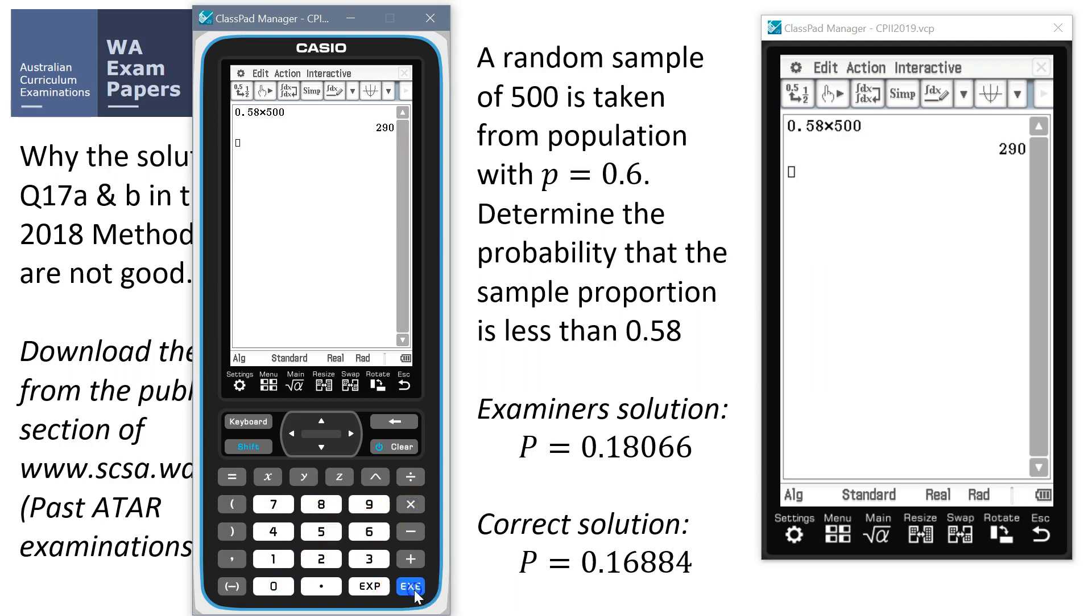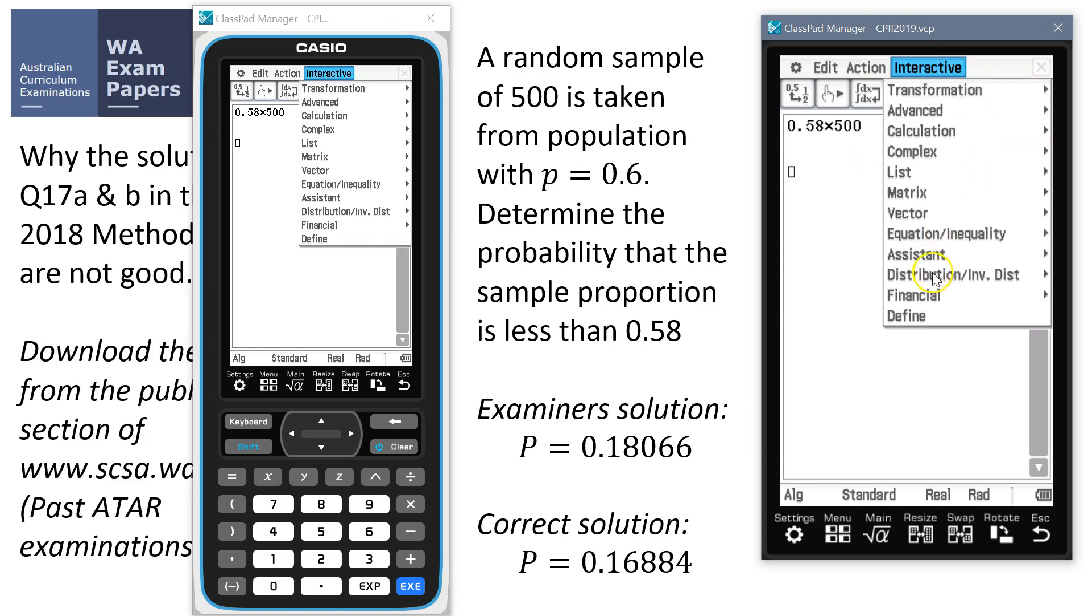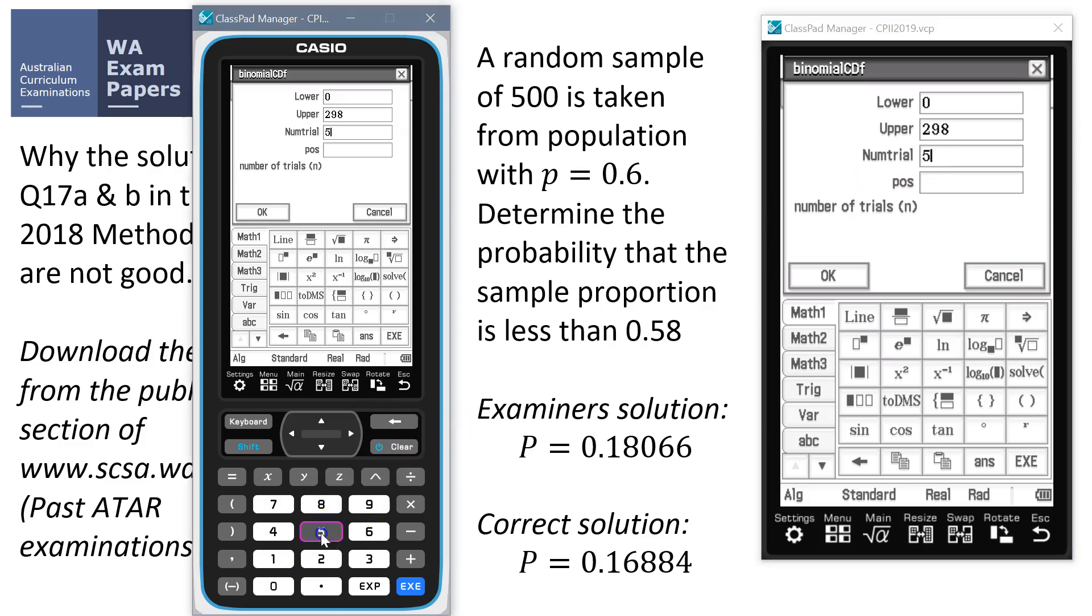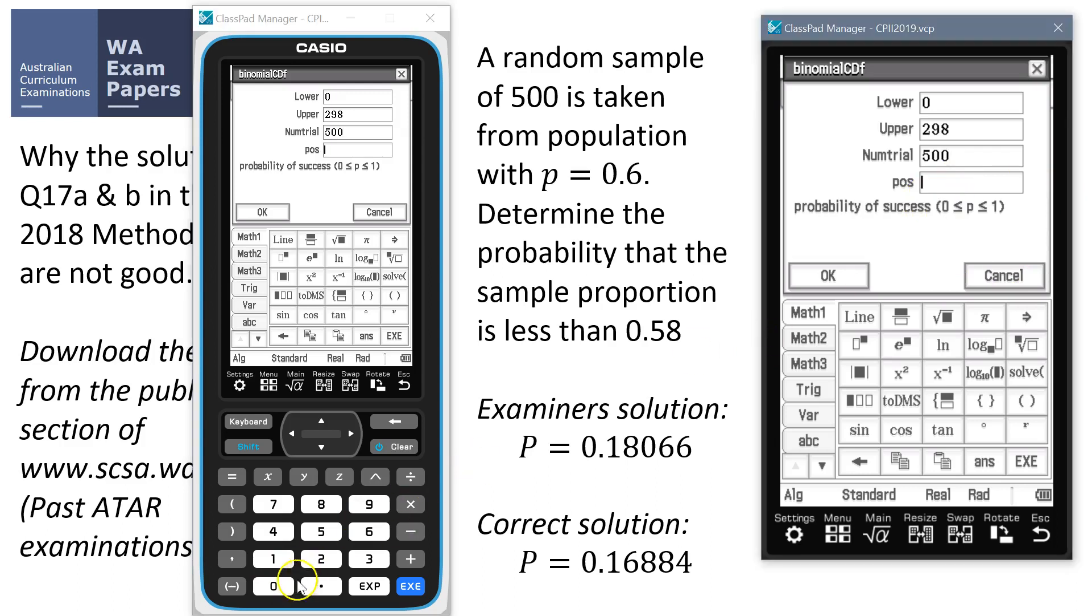Now, we've got to get a sample proportion less than 0.58. So that means we need to take a sample, we need 289 or less. Right now, we're ready to go. So off we go again to our discrete binomial cumulative. We want somewhere between 0 and 289 mangoes in our sample. So we're doing it 500 times. And according to Tina, there's a 60% chance. So what do we get?